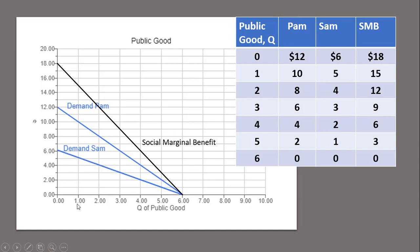At one unit of output, Sam values that at $5. Pam values one unit of the public good at $10. So the point on the social marginal benefit curve is just 10 plus 5, or $15. And you can do that for each unit of output.